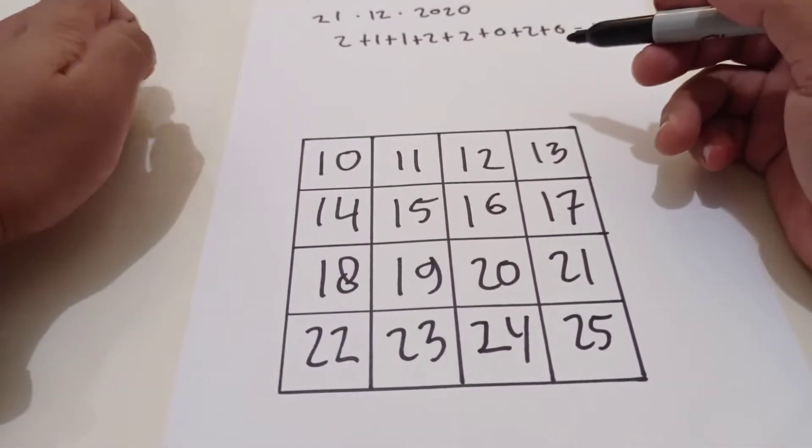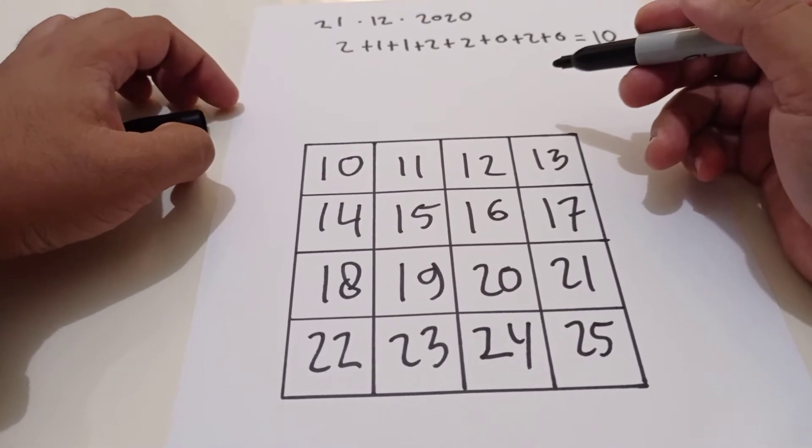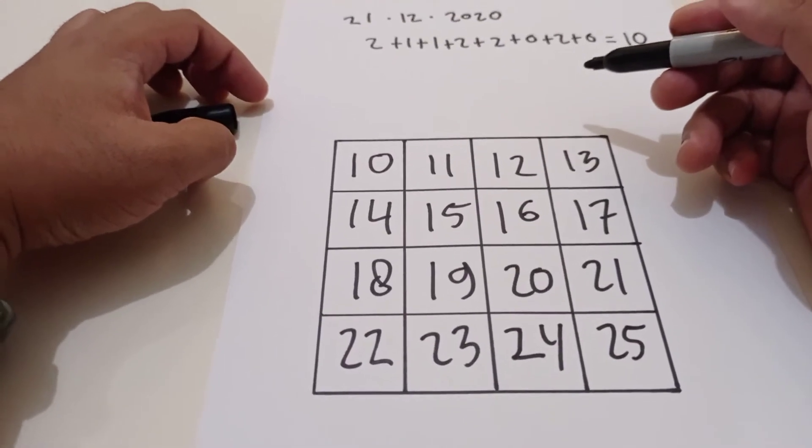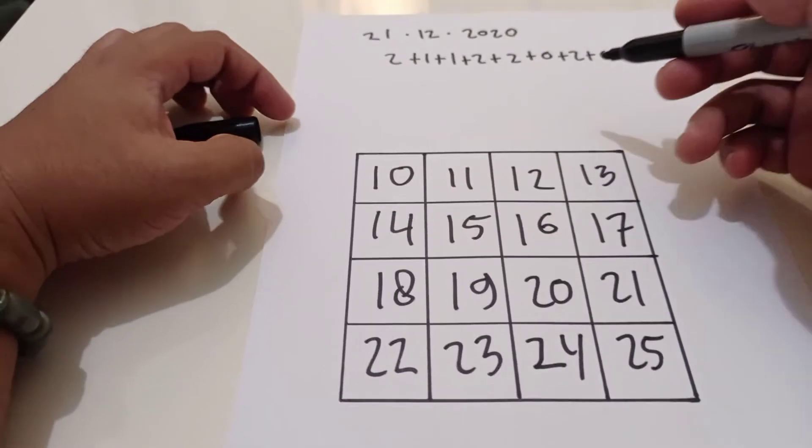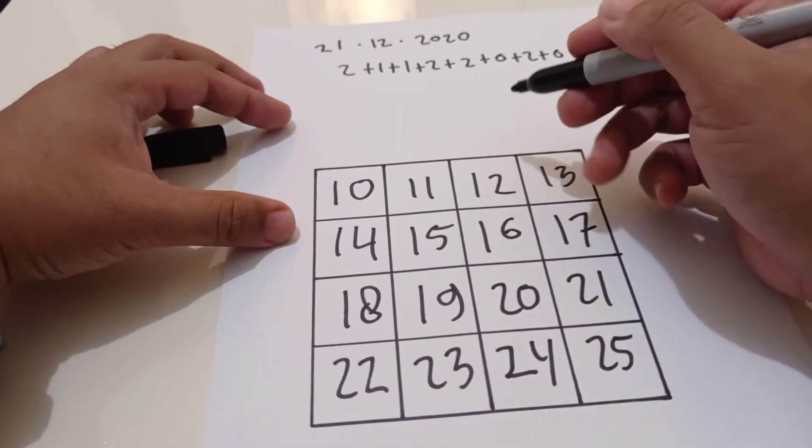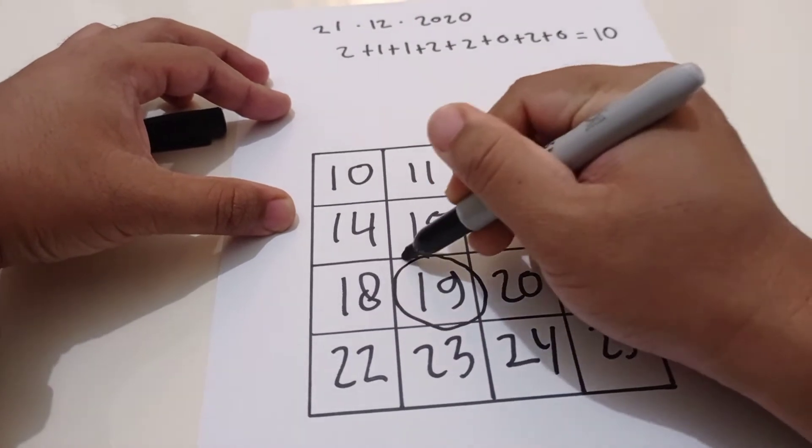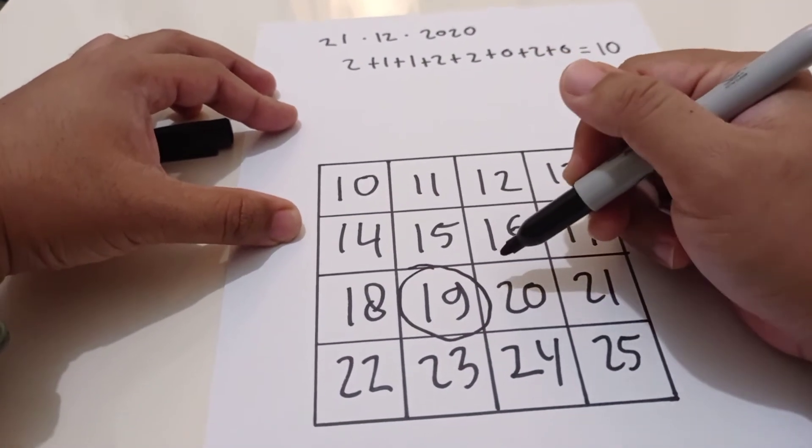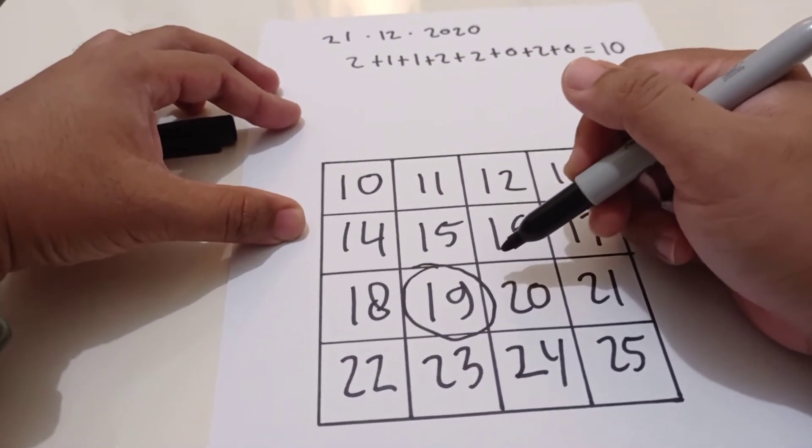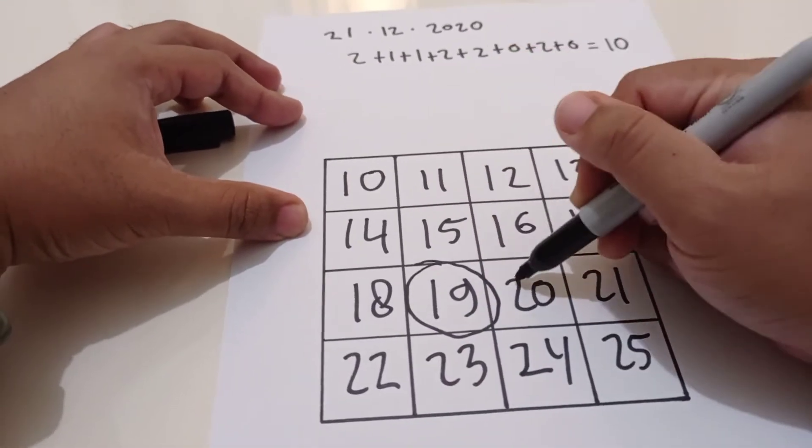Now you need to select any number and eliminate the other numbers in that same row and column. For example, if I choose 19, then I will eliminate the row and the column. I will eliminate the row and the column.